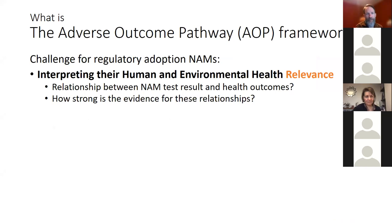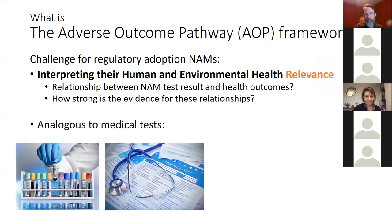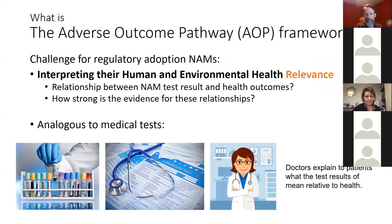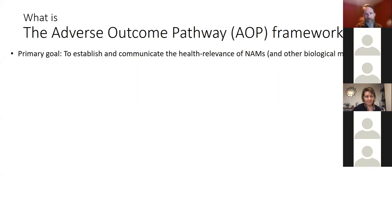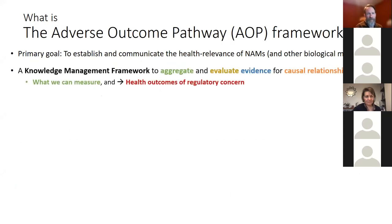One of the major challenges for regulatory adoption of NAMs is interpreting their human and environmental health relevance: what exactly is the relationship between the output of a NAM test and an actual health outcome, and how strong is the evidence? It's analogous to getting blood work results as a raw spreadsheet — you need a doctor to explain the health relevance. That's kind of the role of the AOP framework: to establish and communicate the health relevance of new approach methodologies and virtually any other biological measurement, ultimately to support the use of NAMs in risk assessments.